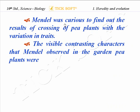Mendel was curious to find out the results of crossing a pea plant with variations of the trait. The visible contrasting characters that Mendel observed in the garden pea plants were studied carefully.